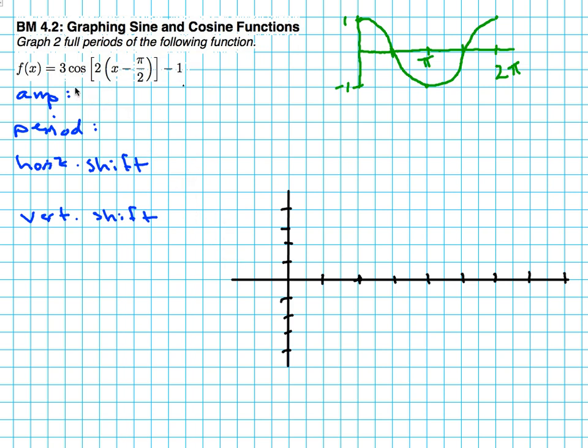So the first thing I'm going to do is go through and find the amplitude, which is 3. I'll find the period, and the period is going to be 2π divided by b. In this case, b is 2, so that makes the period π.